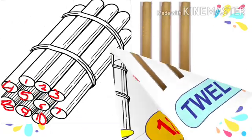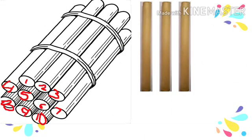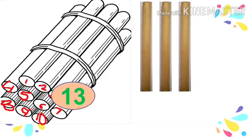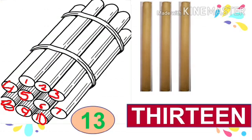Now how many sticks can you see in the picture? Count with me. There is a bundle, and in a bundle there are ten sticks, so we will continue after ten: ten, eleven, twelve, thirteen. Total: thirteen. T-H-I-R-T-E-E-N, 13.